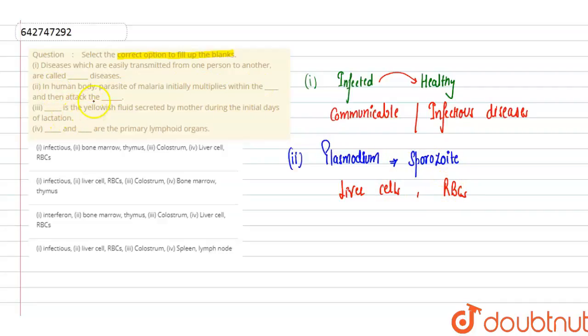Third blank: the yellowish fluid secreted by mother during initial days of lactation. If yellowish fluid is being secreted by the mother during initial days of lactation, that is very rich in the antibody IgA and that yellowish fluid is called colostrum. Colostrum is very rich in antibodies and proteins and is very essential for the baby. It provides a lot of immunity to the baby.